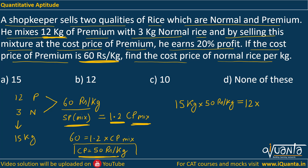We equate: 12 kg of premium rice costs 12 × 60, plus 3 kg of normal rice at unknown cost price x. So: 750 = 720 + 3x. Solving, 3x = 30, therefore x = 10. The cost price of normal rice is Rs 10 per kg.